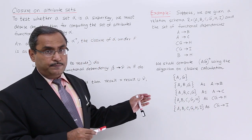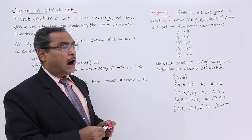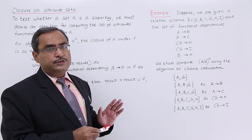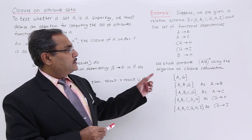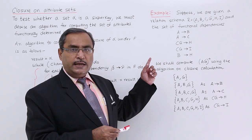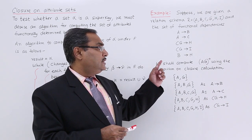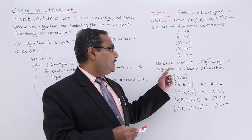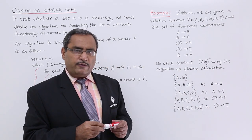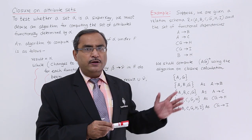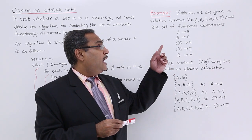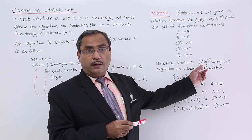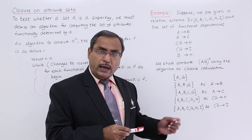Here is the example. Suppose we are given a relation scheme R consisting of six attributes: A, B, C, G, H, I. The set of functional dependencies given are: A determines B, A determines C, CG determines H, CG determines I, and B determines H. We shall compute AG plus using the closure calculation algorithm to check whether AG is a super key for this relation.